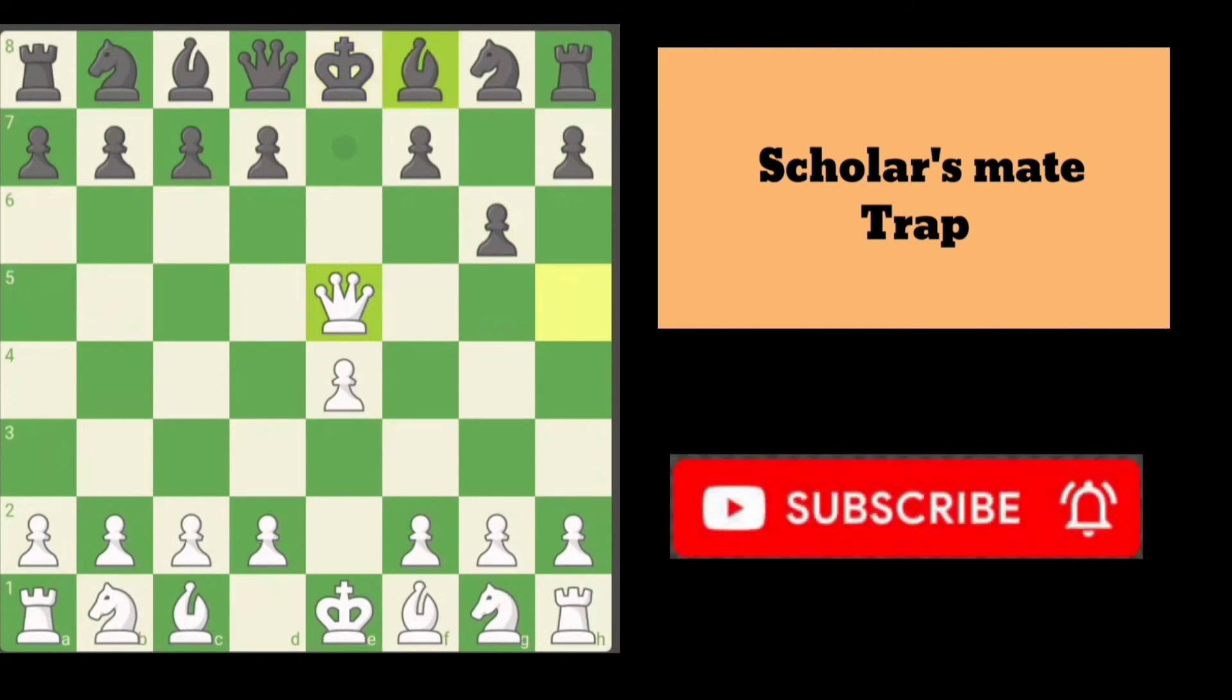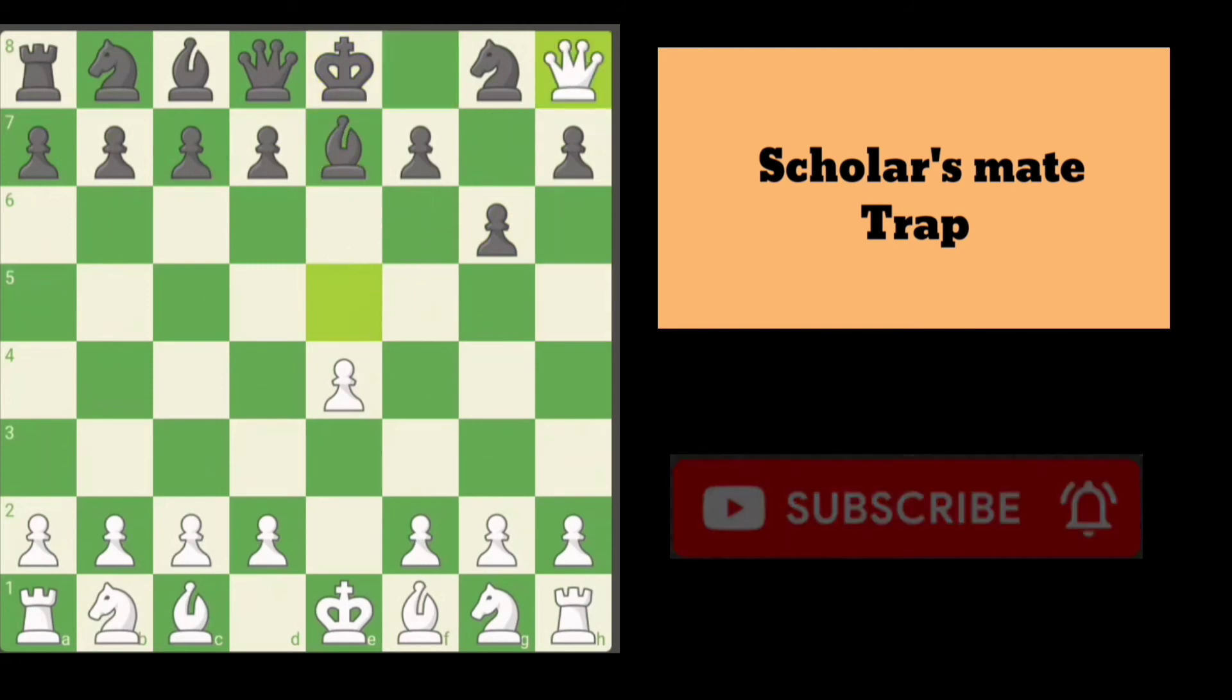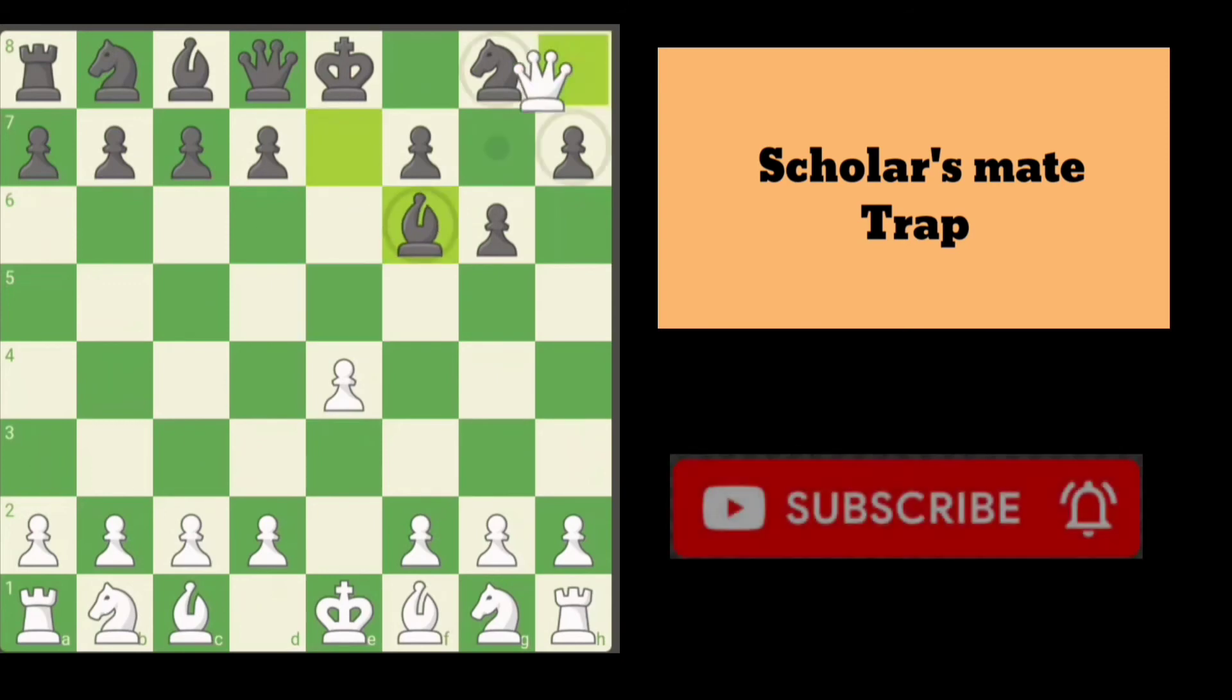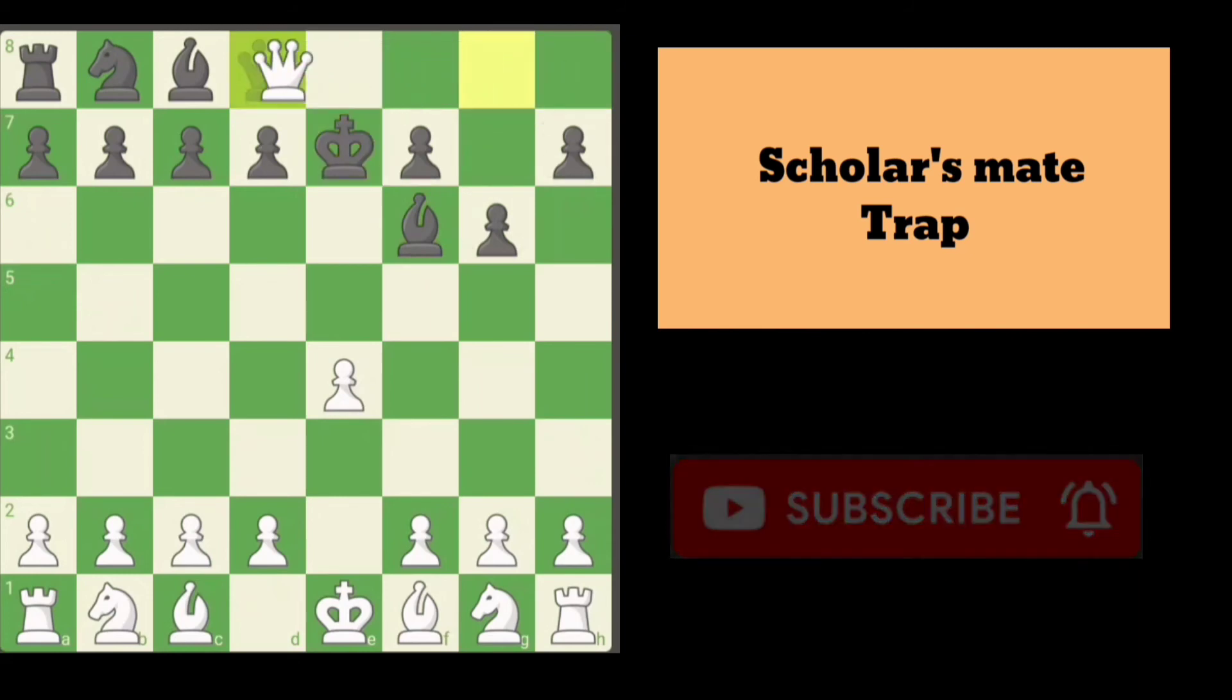Now Black blocks with the bishop, simply take the rook. If the bishop attacks your queen again, simply take the knight with check. After the king moves, queen takes queen.